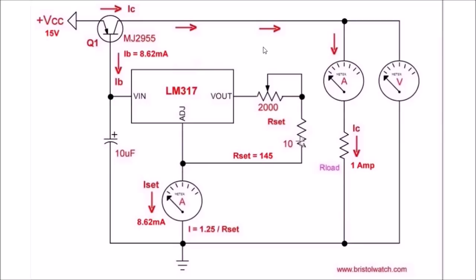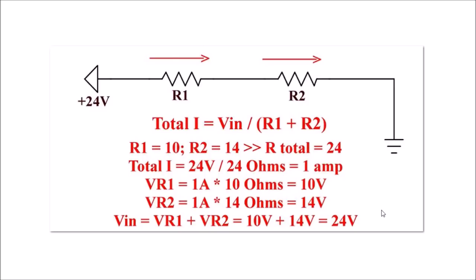Let me explain how this happens by looking at common series resistor circuits. In this example circuit, I've set R1 to 10 ohms and R2 to 14 ohms, so our total resistance is R1 plus R2 equals 24 ohms. To get the current - note the current through R1 equals the current through R2 - we divide 24 volts input by the R total, which is 24 ohms, giving us 1 amp.